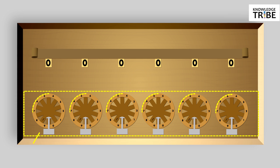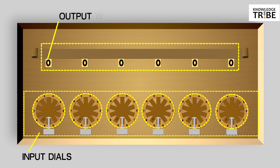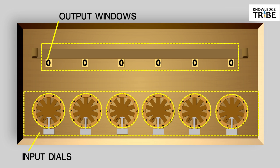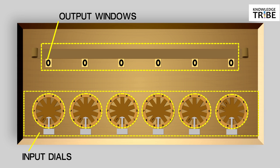There are input dials and output windows on the top of the Pascaline. Inside each of the dials, we can see a small drum with digits 0 to 9 written on it. Each drum has two rows of numbers, one below the other.